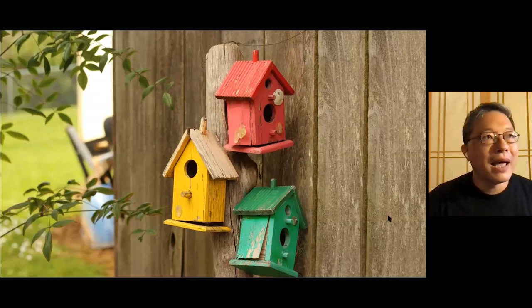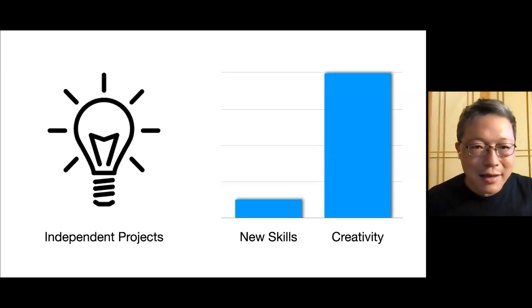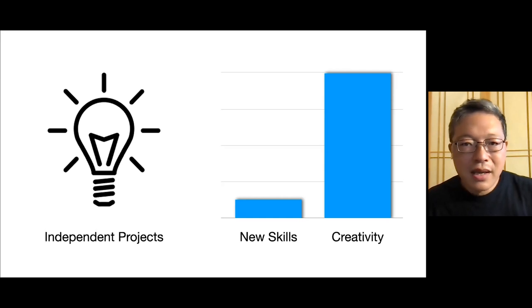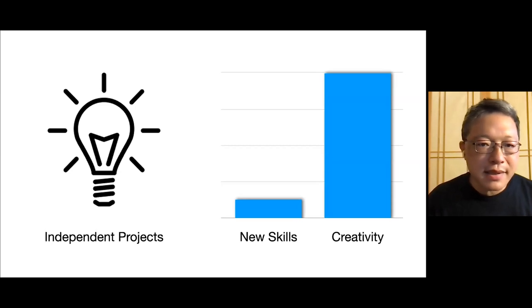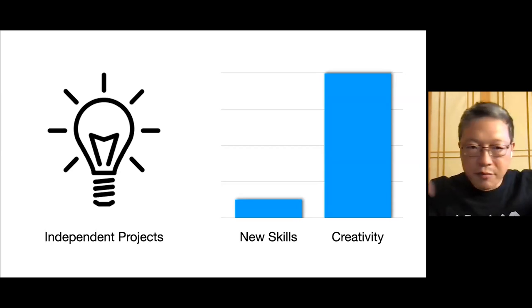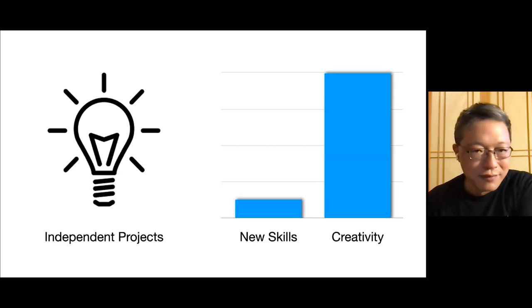That's why I give them an independent project. An independent project is very low on new skills acquisition — I'm not asking them to gain new skills, I'm asking them to demonstrate those skills in a creative and meaningful way that's personal to them. That's why independent projects and birdhouse activities go hand in hand. Some schools skip the birdhouse activity entirely and say, 'Go teach yourself, the internet's a wonderful place,' but then you can't really assess where the skill gaps are.